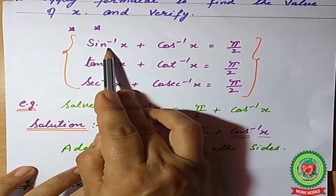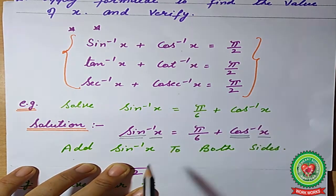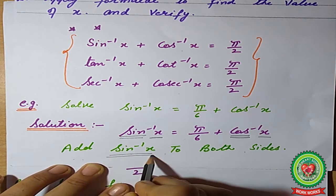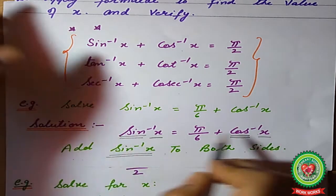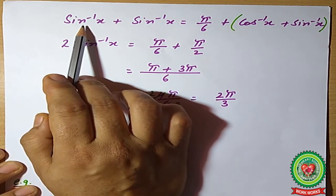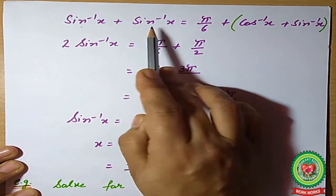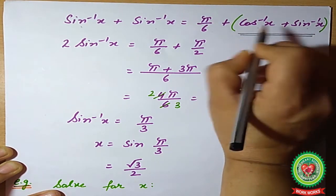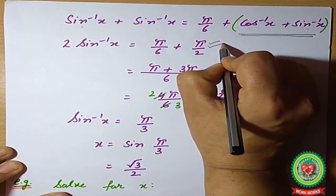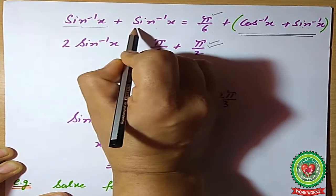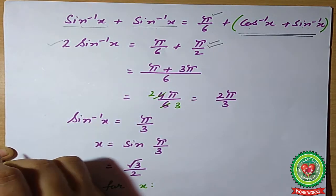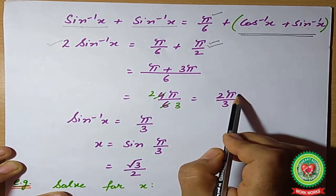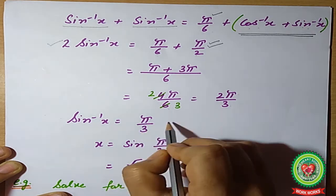We have the property sin⁻¹x + cos⁻¹x = π/2, so we can add sin⁻¹x to both sides. When we add sin⁻¹x to both sides, the left-hand side becomes 2·sin⁻¹x, and on the right-hand side we can apply the property cos⁻¹x + sin⁻¹x = π/2. So the right-hand side becomes π/6 + π/2, which gives 2π/3. Dividing both sides by 2, sin⁻¹x = π/3.